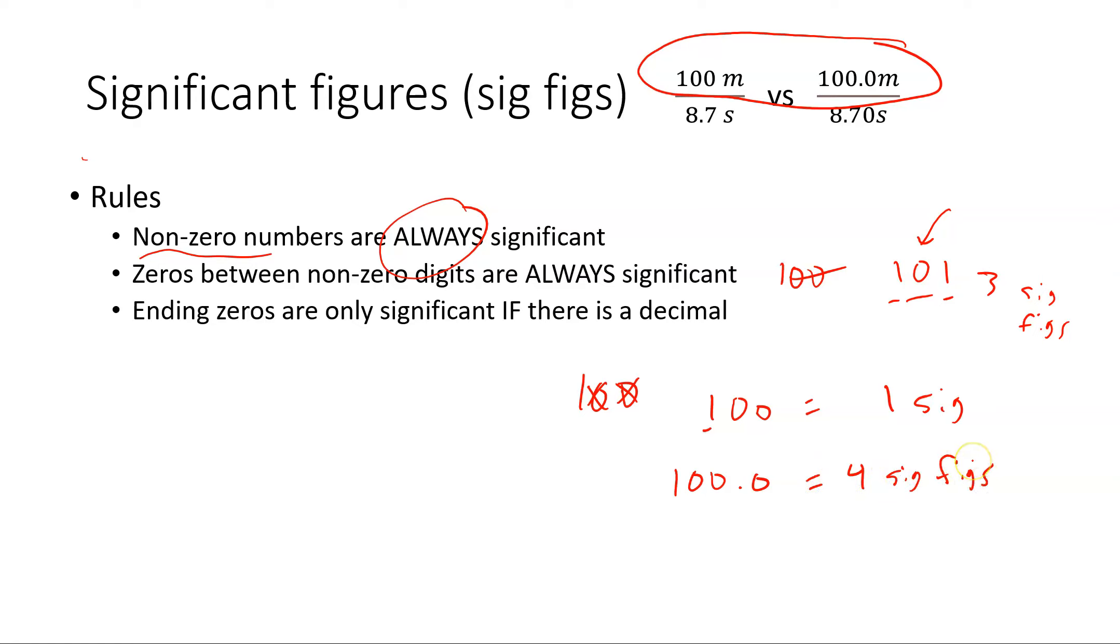That means four digits that I actually measured to. So non-zero numbers always significant, zeros between non-zeros always significant, ending zeros sometimes significant - and the sometimes is if there is a decimal. And the last rule is leading zeros are never significant. And when do we see leading zeros? We see those when we have a decimal.